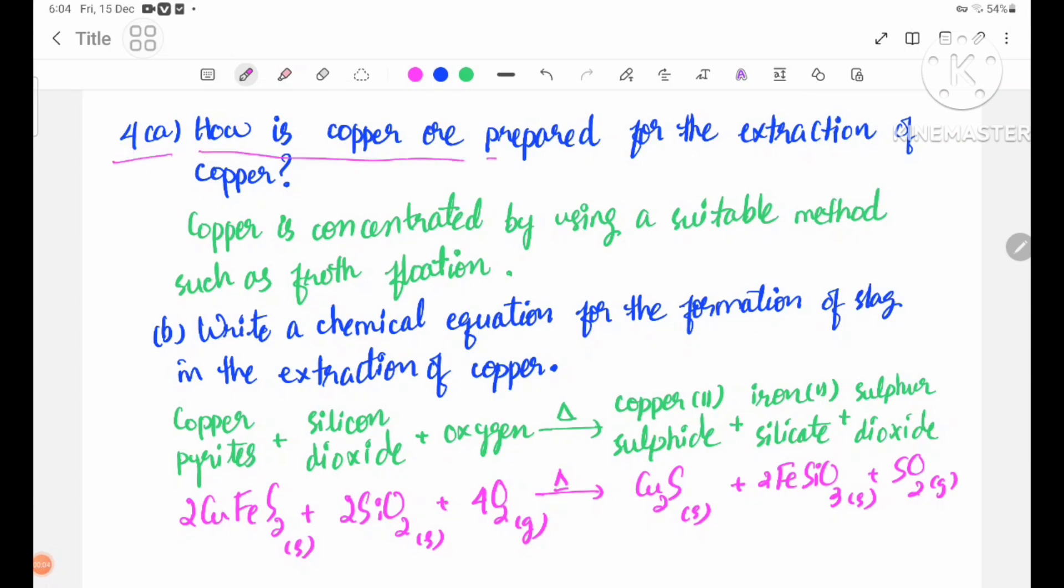Question 4A: How is copper prepared for the extraction of copper? Copper is concentrated by using a suitable method such as froth floatation. Number B: Write a chemical equation for the formation of slag in the extraction of copper.